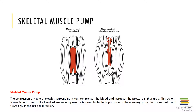The skeletal muscle pump is important in assisting venous blood to be returned to the heart. The contraction of skeletal muscles compresses the veins and the blood within them, increasing pressure in that area and forcing blood closer to the heart. In addition, the one-way valves ensure that venous blood only flows in one direction.